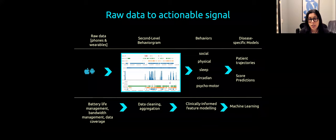And then what we can do is put these signals together into understanding people's social behavior, physical behavior, sleep behavior, how their biological clock works, psychomotor, that means how are they slowing down, are they speeding up. And that could be used to look at patients' trajectories and then to get an assessment of people's mental health.